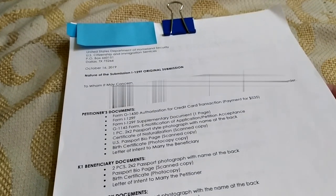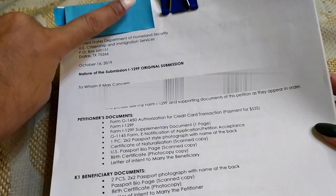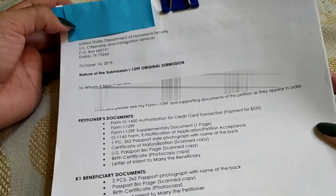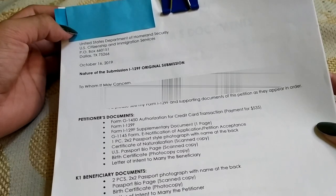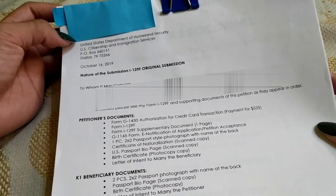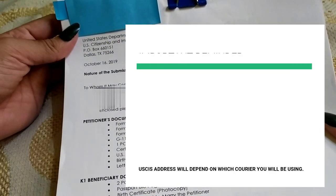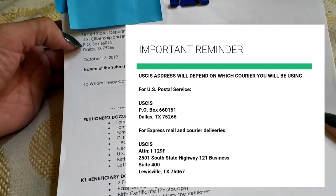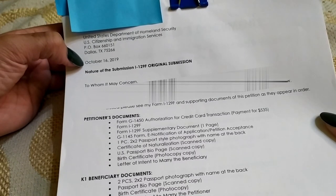What are the things you need to include in your cover letter? The top part of your cover letter should be the name of your petitioner, address, and also his contact number. We are filing this application to the United States Department of Homeland Security, U.S. Citizenship and Immigration Services — that's USCIS. Include the address and also the date.